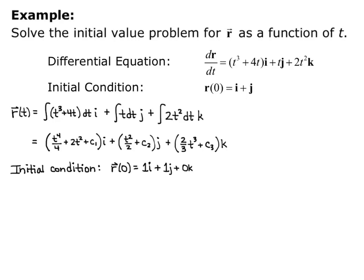We do the i component first. We get 0 to the 4th over 4 plus 2 times 0 squared plus c1 equals 1, and everything zeroes out except for c sub 1, so c sub 1 equals 1.